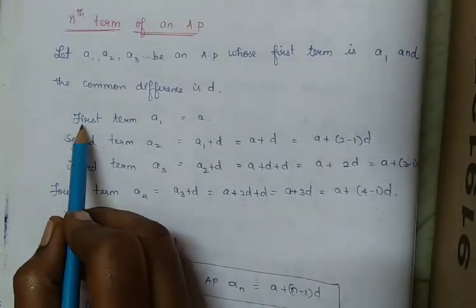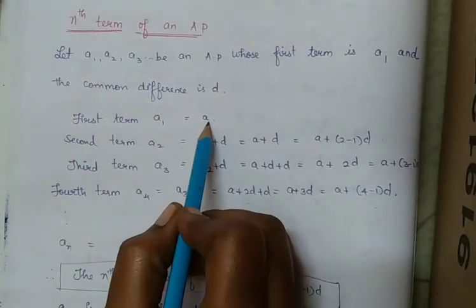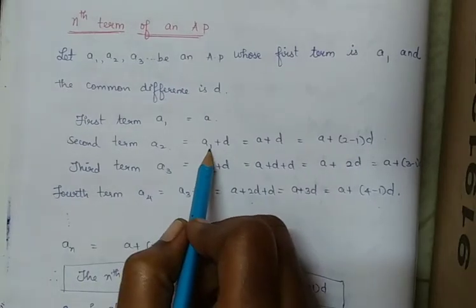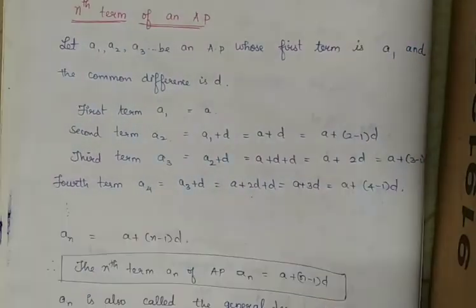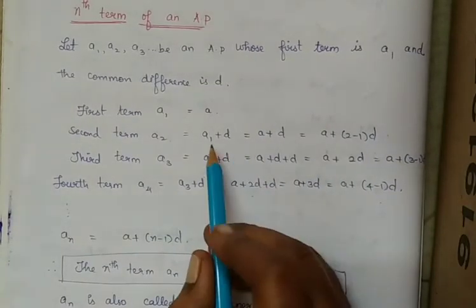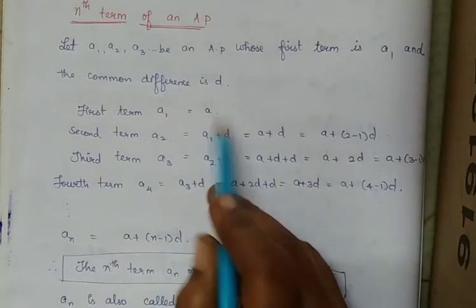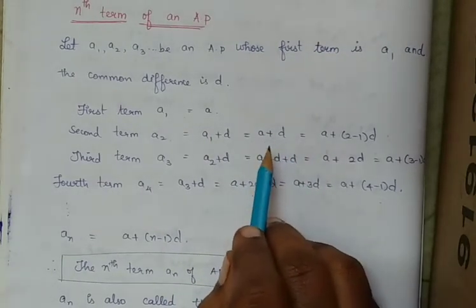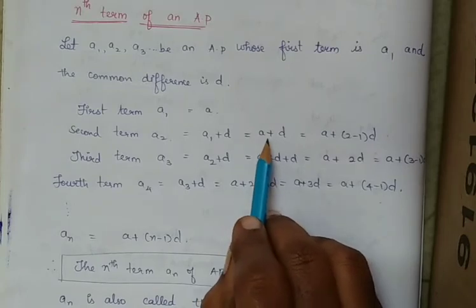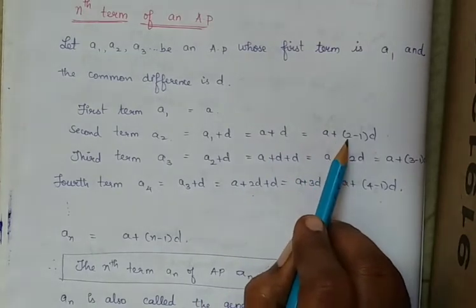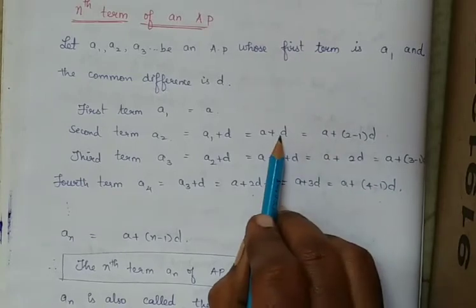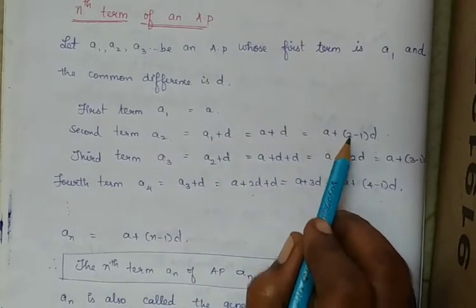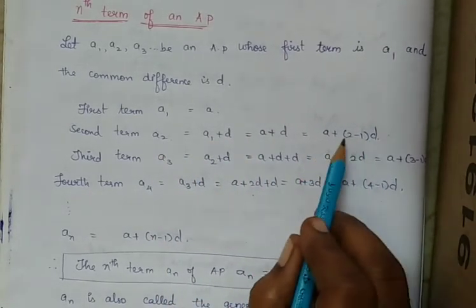Now, the first term A1, let us write this as A. The second term A2 is nothing but A1 plus D. Now this A1 plus D — since A1 value is A — we can write this as A plus D. This can also be written as A plus (2 minus 1) into D. This is the second term, so (2 minus 1) into D.